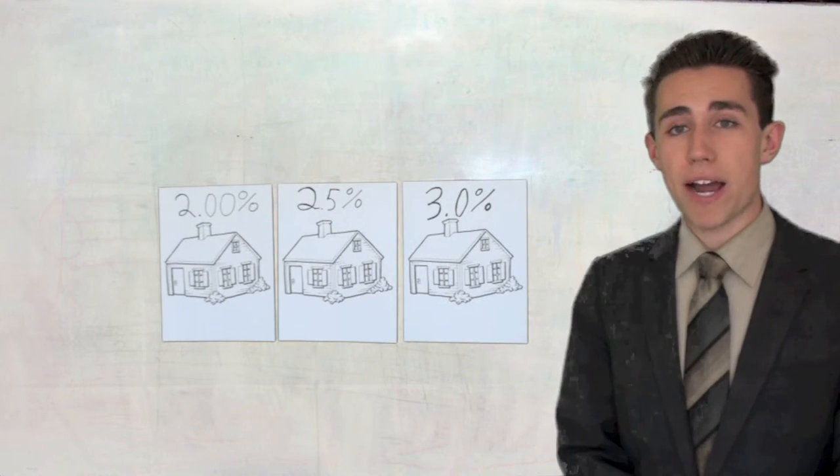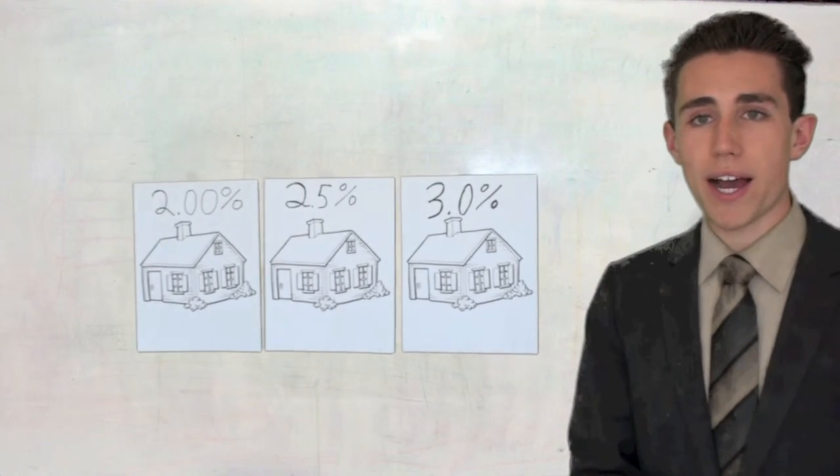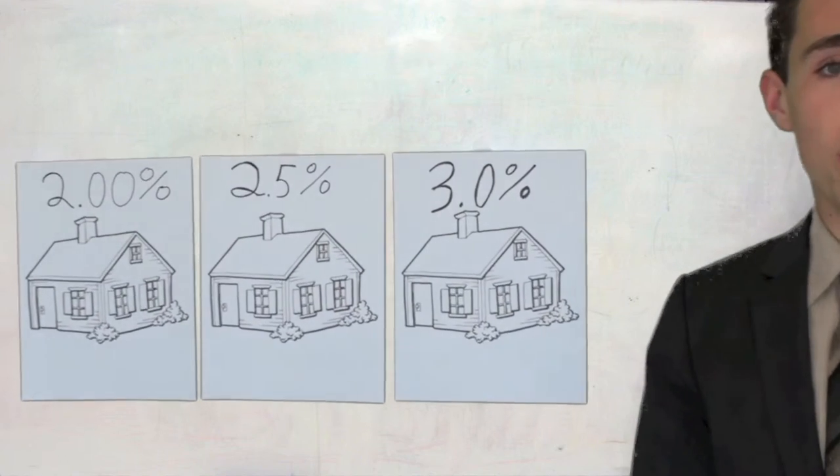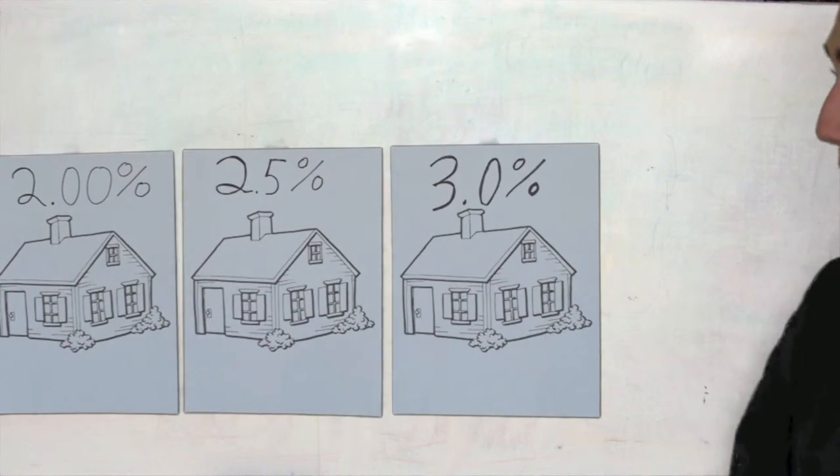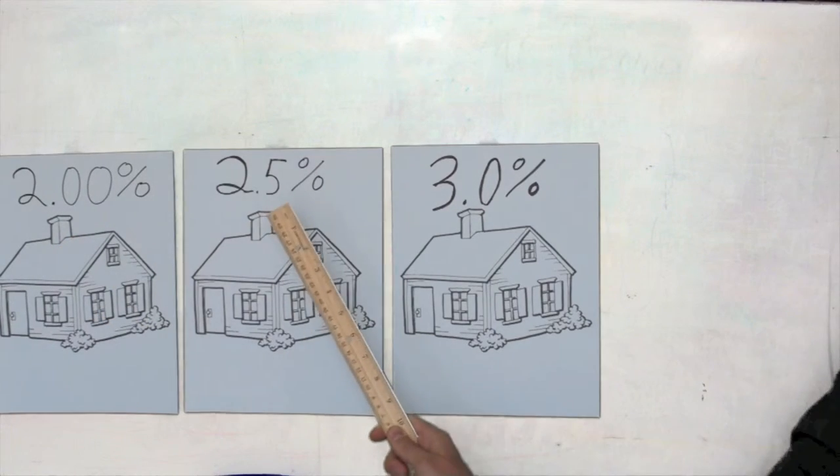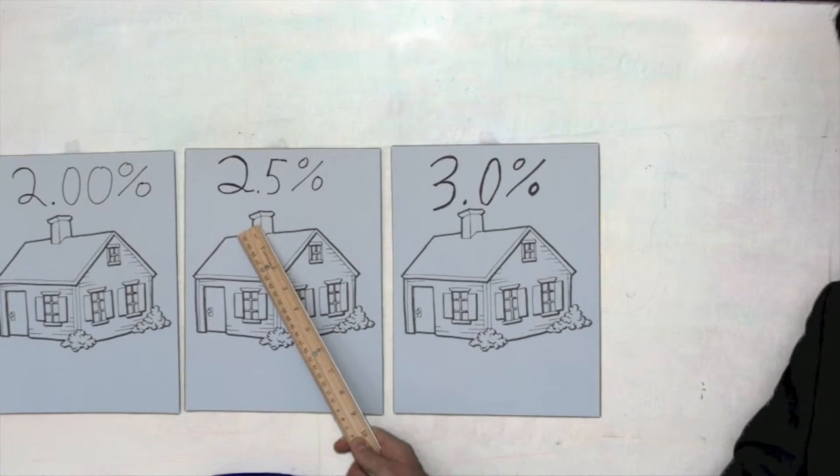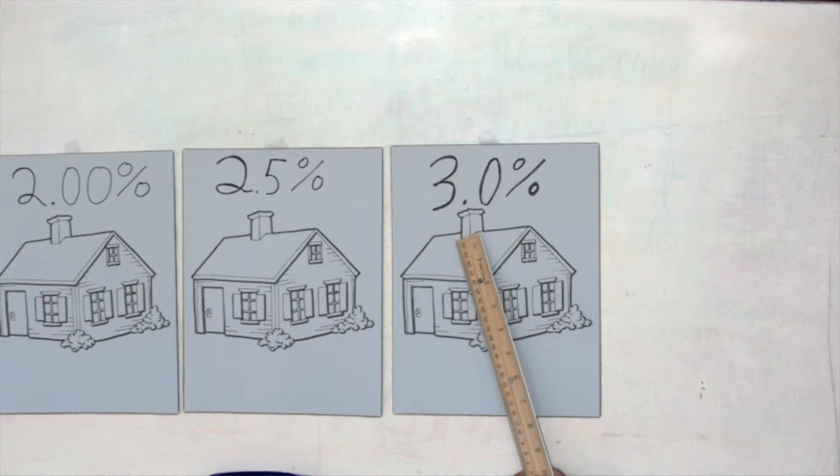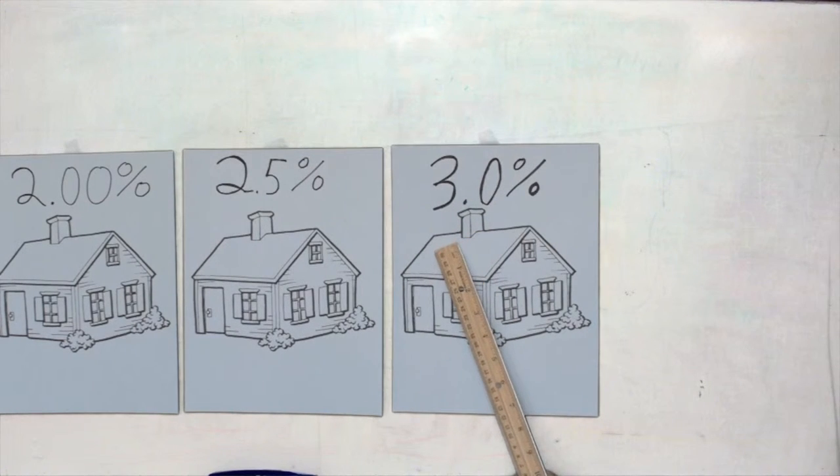When a buyer asks a buyer's agent which property they should buy in a certain tract with three homes for sale, one property is listed with a 2% commission to the buyer's agent, one with 2.5%, and another with 3%.